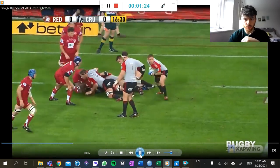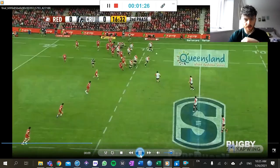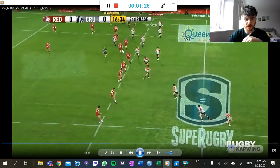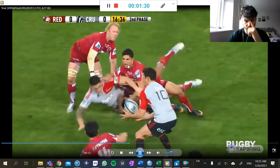So you'll see here, two forward runners, and they can give it in behind. Draws in those defenders, keeps these ones from coming up too hard.